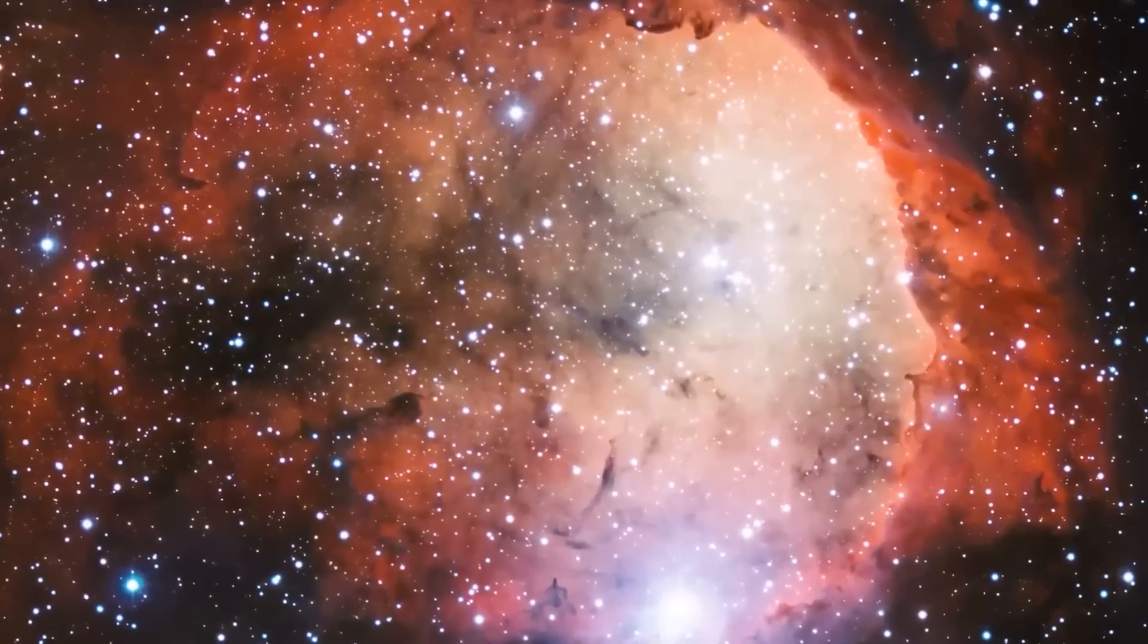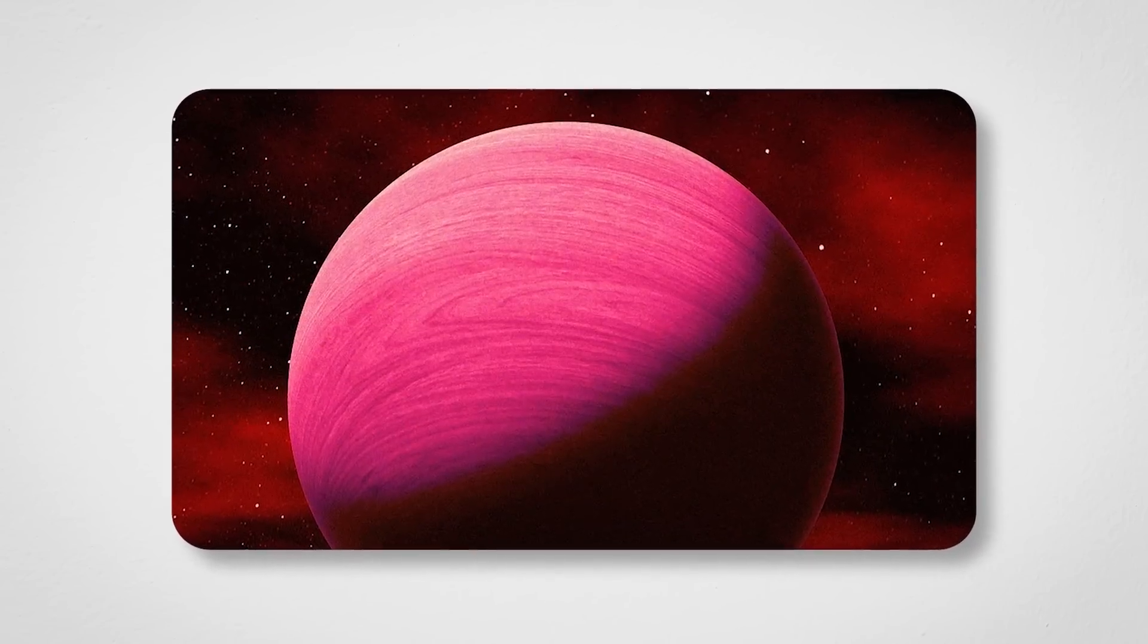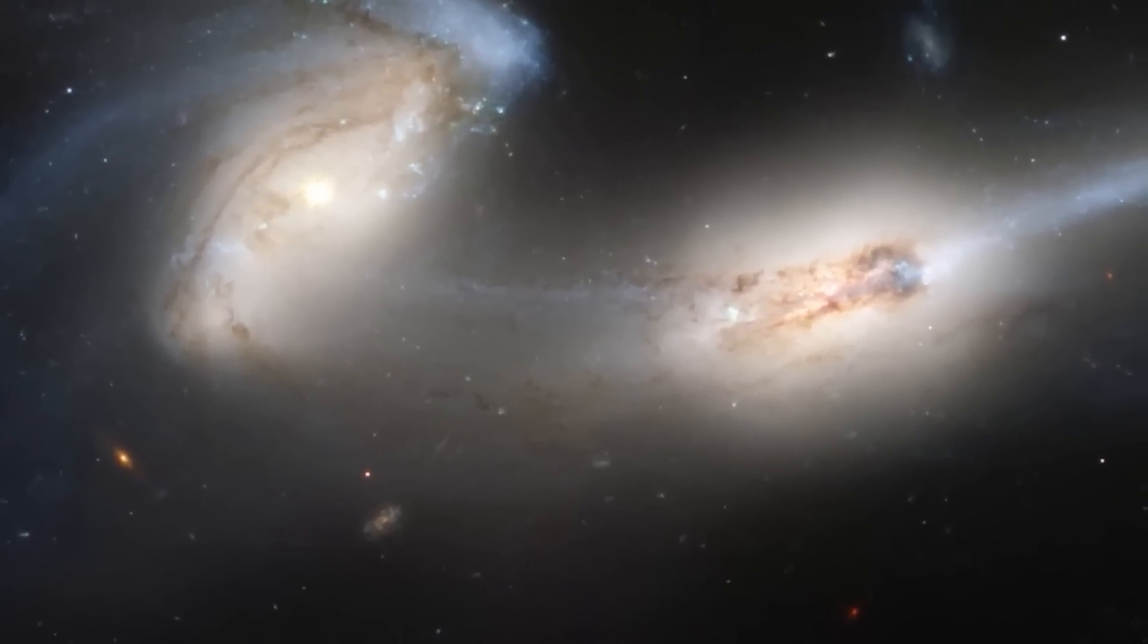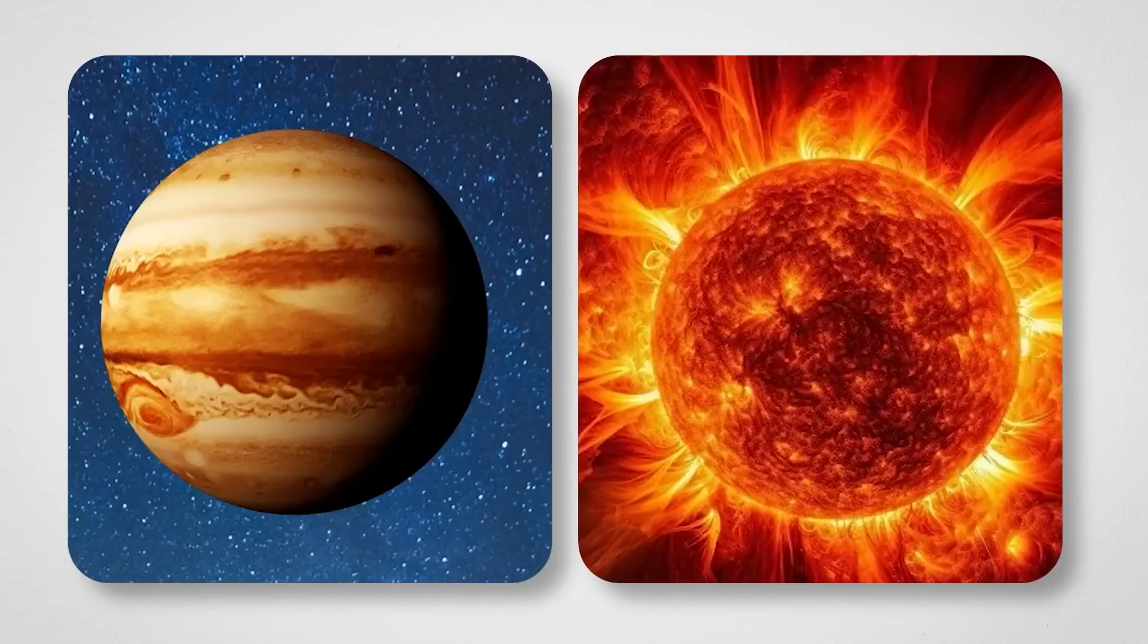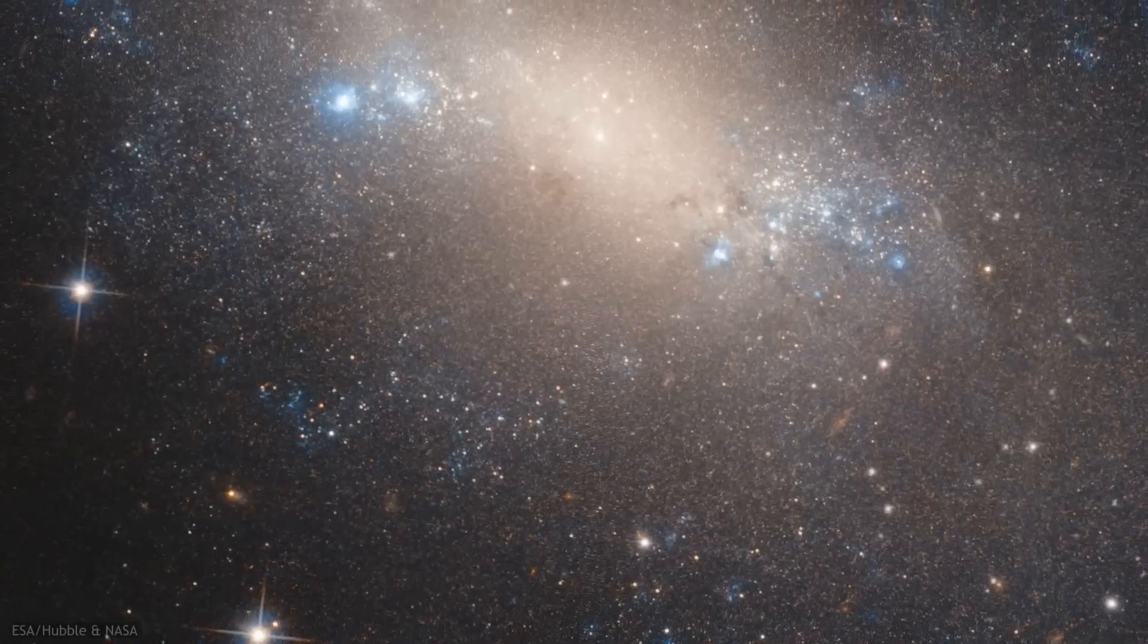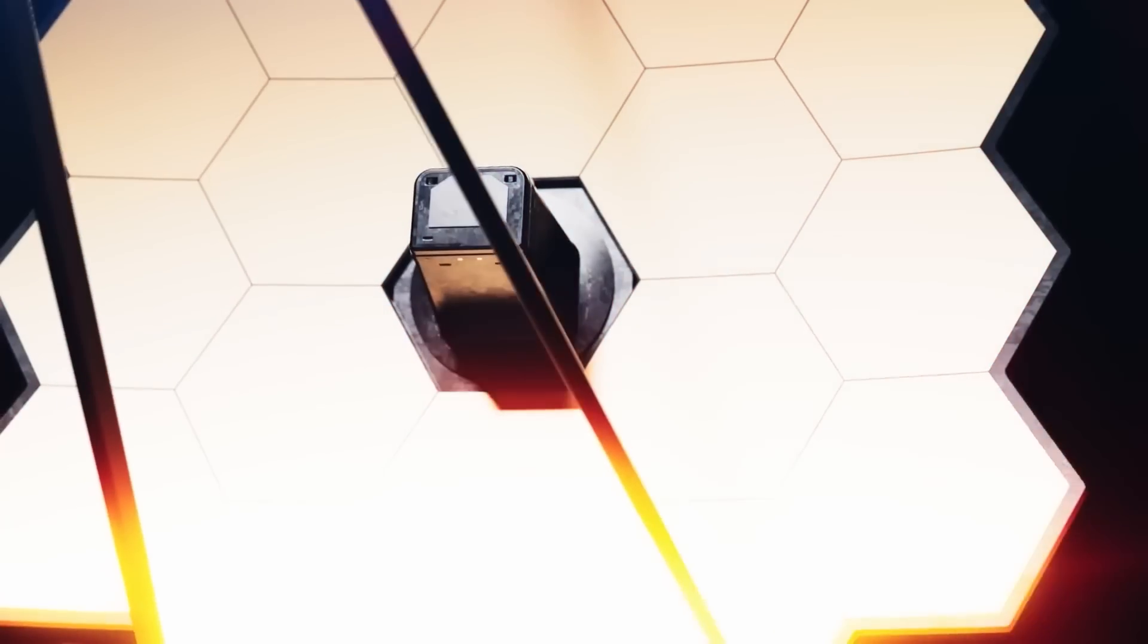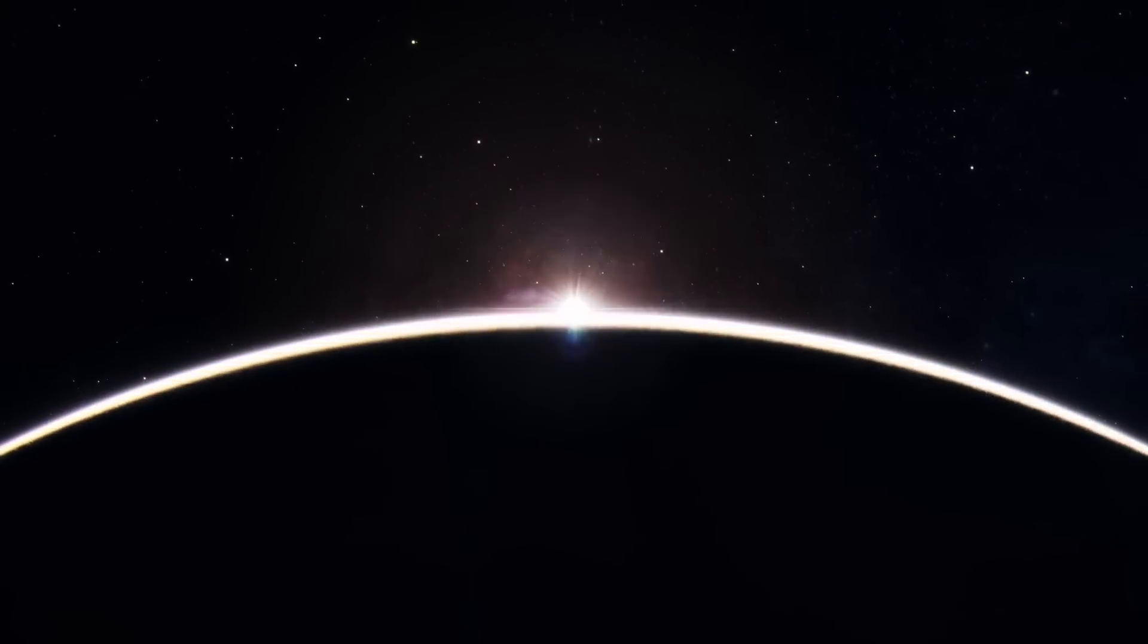But beneath its magenta clouds lies a mystery so profound it could rewrite everything we know about planets. This pink planet orbits a star that's much like our sun, but here's the kicker: it's orbiting at a distance much farther than Jupiter is from our sun, think several times the distance, making its placement a bit of a cosmic head-scratcher.